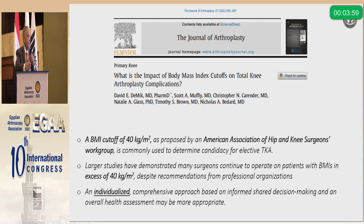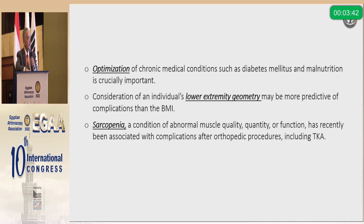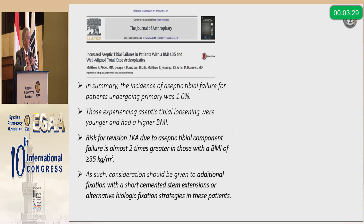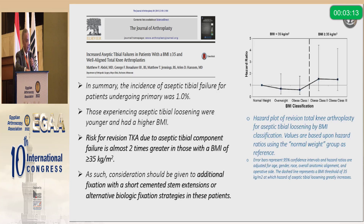Regarding obesity, a BMI of 40 is advocated by the American Association of Hip and Knee Surgeons Working Group as a candidacy threshold for knee replacement, although large studies show successful outcomes in patients with BMI above 40, making it an individualized decision requiring optimization of medical conditions. Lower extremity geometry may be more predictive of failure than BMI alone, and sarcopenia needs to be corrected as well. Matthew Abdel's publication found tibial failure at 1%; aseptic loosening usually occurs in younger, high-activity patients with high BMI, with revision risk more than doubled when BMI exceeds 35. He advocated either using a short cemented stem or shifting to an alternative approach once BMI exceeds 35.